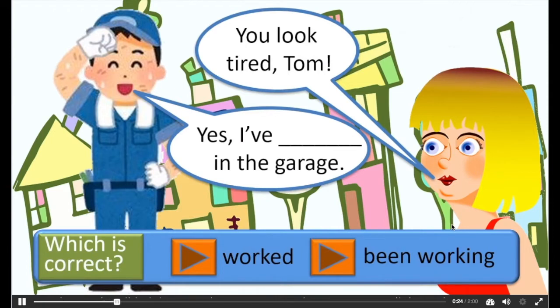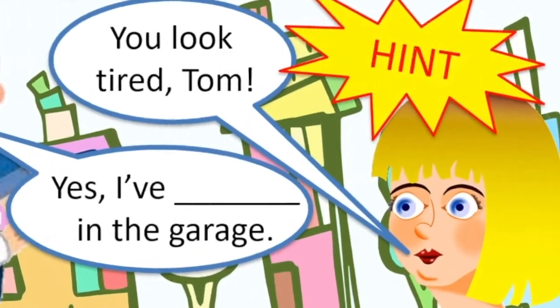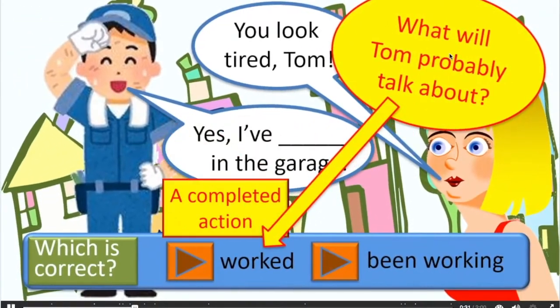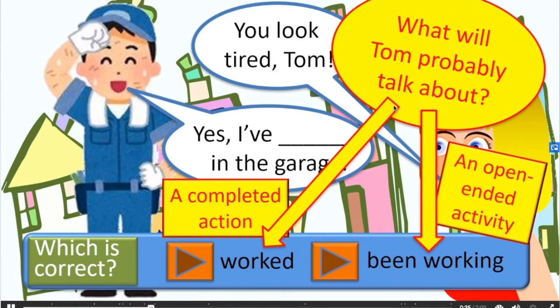Which is correct? Will Tom say, I've worked in the garage, or I've been working in the garage? Here's a hint. What will Tom probably talk about? Will it be a completed action, or will it be an open-ended activity?